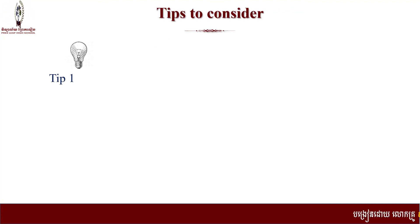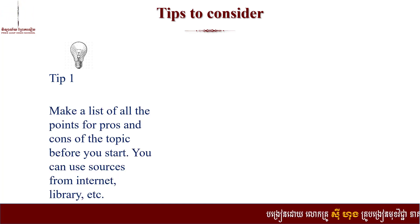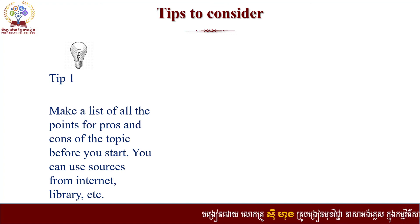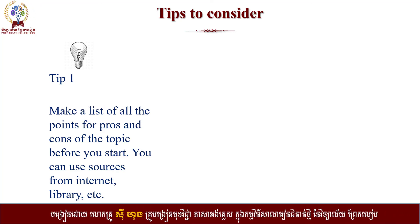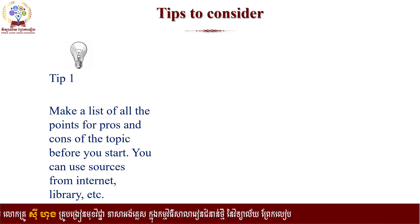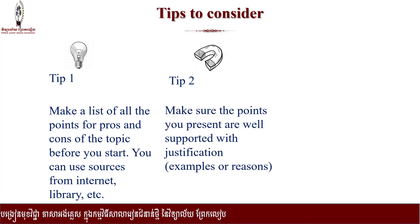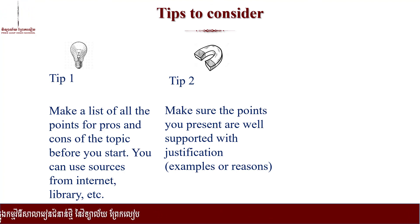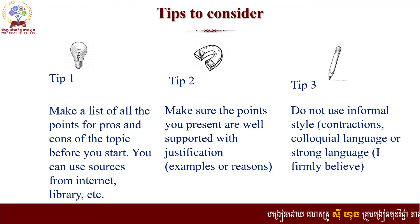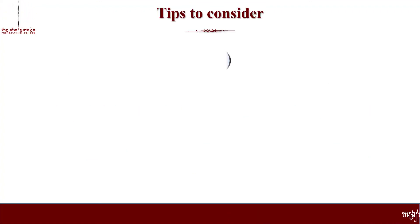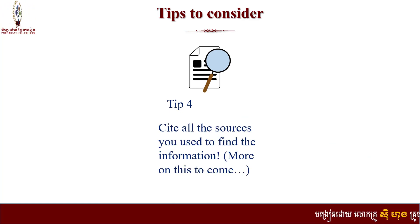It is key to consider before you write: make a list of all the pros and cons of the topic before you start — this is the pre-writing step. List at least three advantages and at least three disadvantages. Tip two: make sure the points you write are well supported with examples or reasons. Do not use an informal style in writing — no contractions, colloquial language, or strong language. Do not forget to cite all the sources you use to find your information.